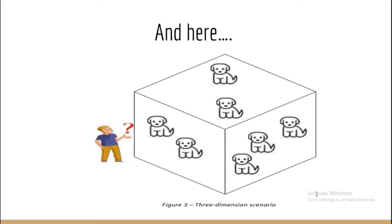So the task of finding dogs is getting tougher and tougher as the dimension increases. This is the curse of dimensionality.